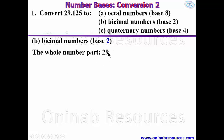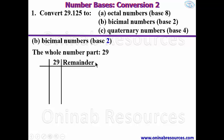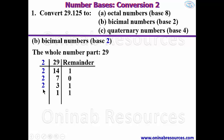We convert the whole number part by continuous division by 2 and taking the remainder. We have 29 in the number column and a remainder column. 29 divided by 2 gives 14 remainder 1. 14 divided by 2 gives 7 remainder 0. 7 divided by 2 gives 3 remainder 1. 3 divided by 2 gives 1 remainder 1. 1 divided by 2 gives 0 remainder 1. Since the quotient is 0 we stop, and we read the remainders upward.